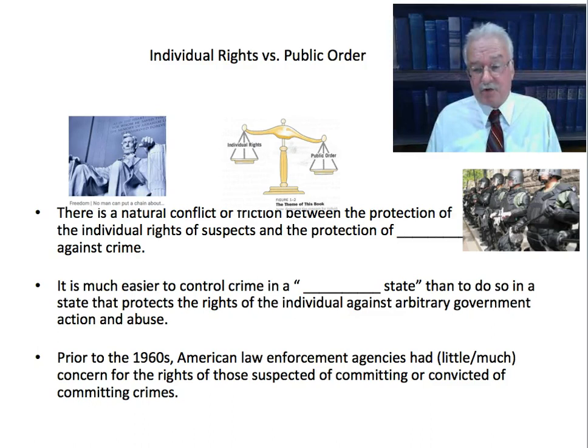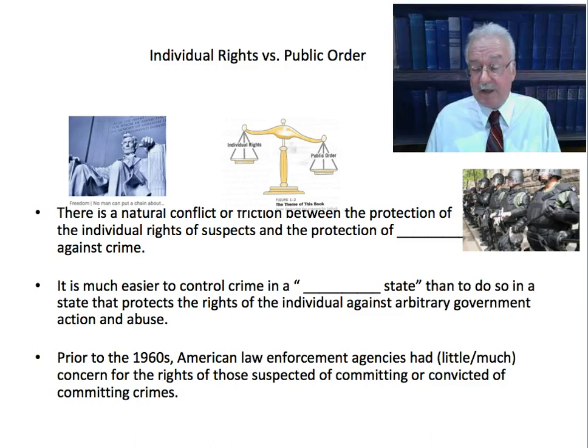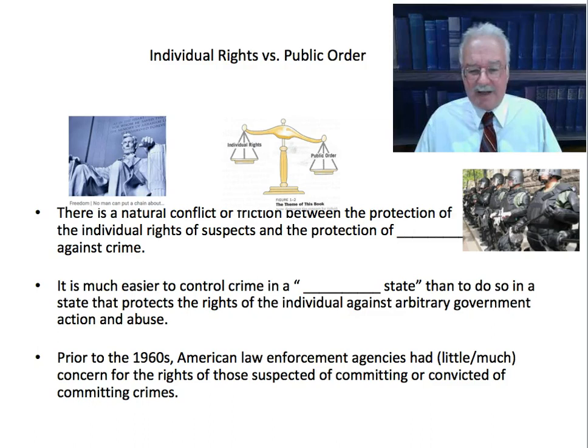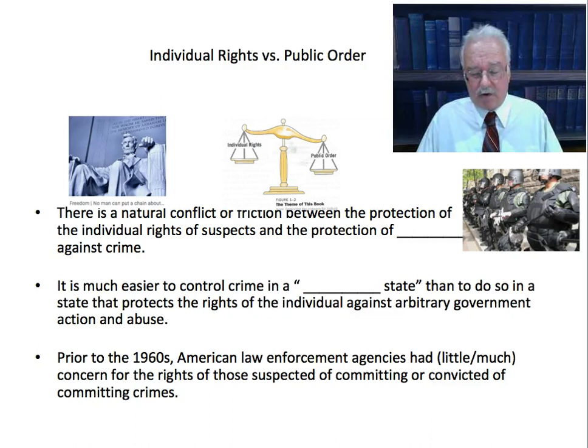That's why you have the first ten amendments, or the Bill of Rights, which protects you against unreasonable searches and seizures, your freedom of speech, your freedom of religion — all individual rights protections. So it's a lot easier to control crime in a police state than in a state with individual protections against arbitrary action and abuse. We've had these protections in our Constitution, and many state constitutions also add other rights or make them stronger. However, prior to the 1960s, American law enforcement agencies had very little concern for the rights of those suspected or convicted of crimes.